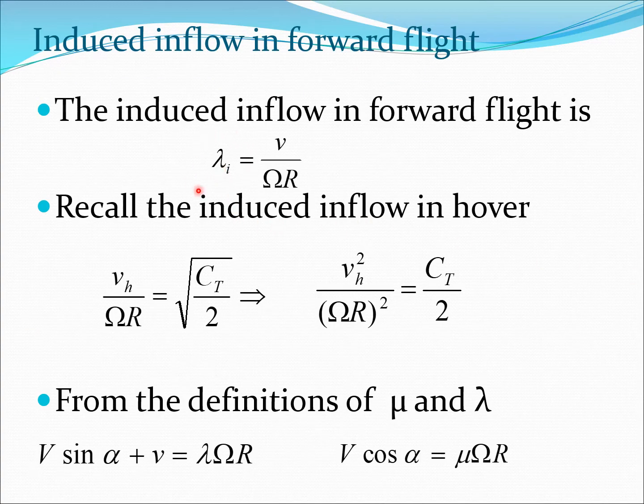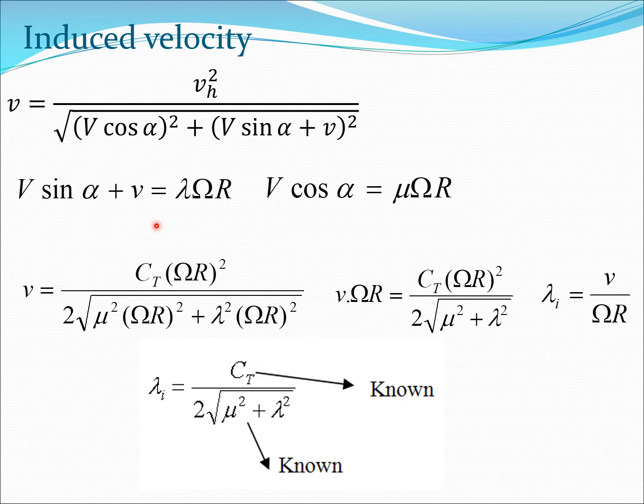That is the induced inflow in forward flight, V divided by the rotation speed times r. Again non-dimensional. Both may be in meters per second or feet per second depending on where you are in the world. Recall the induced velocity in hover condition. That was Vh by rotation speed times r and that was equal to root ct by 2. I can immediately square it and get this expression here. From the definitions of lambda and mu, I can write this here. Essentially, I have taken the definition of lambda and brought the rotation speed term to this side, and same thing I have done with mu here.